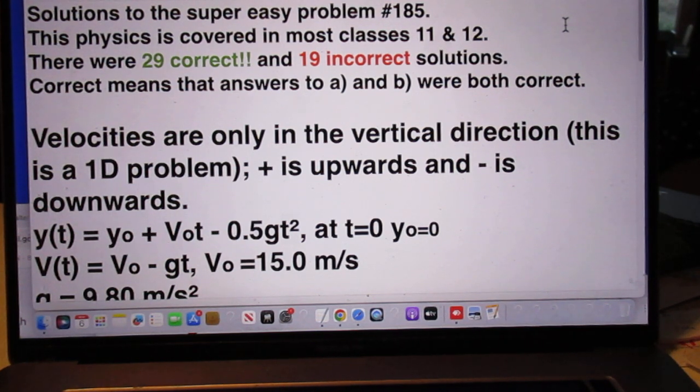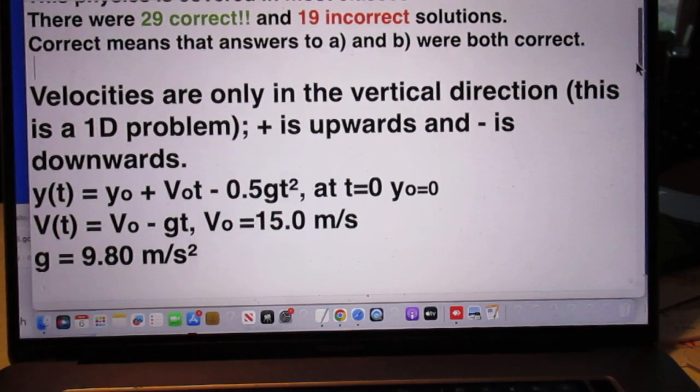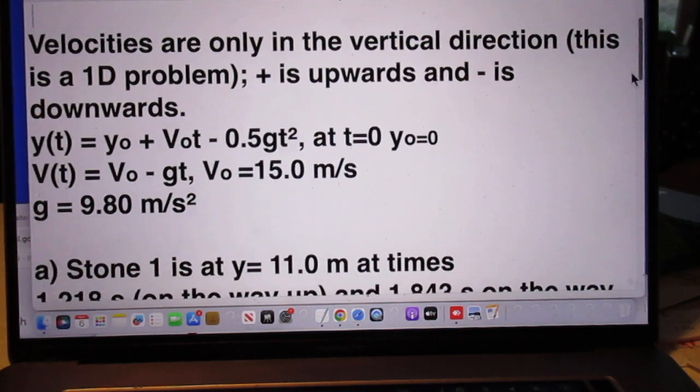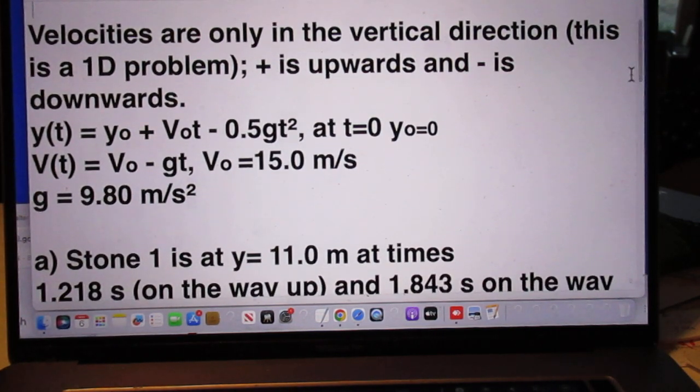Correct means that answers to a and b are both correct. The velocities are only in the vertical direction. This is a one-dimensional problem. Plus is upwards and minus is downwards.